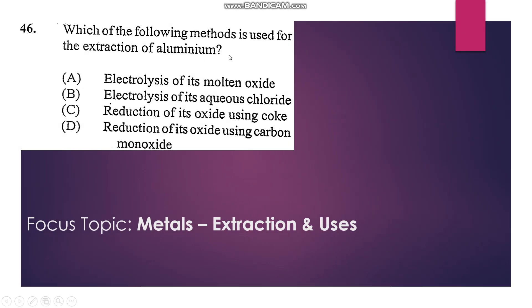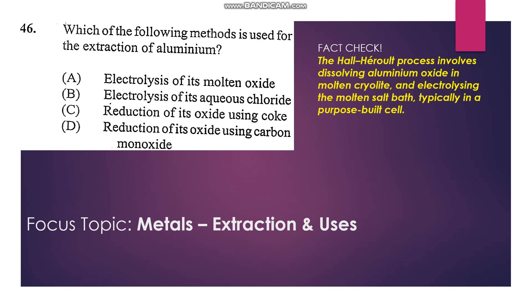46: Which of the following methods is used for the extraction of aluminum? Aluminum is extracted from aluminum oxide—alumina—by electrolysis, so it would be A.